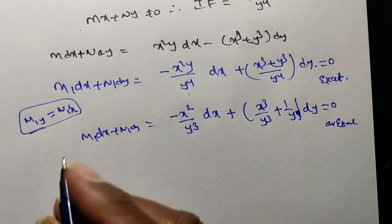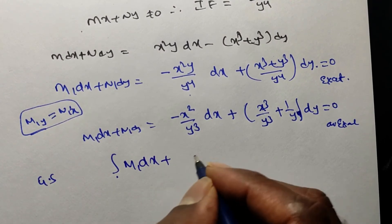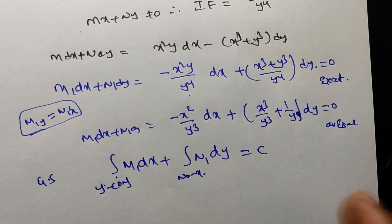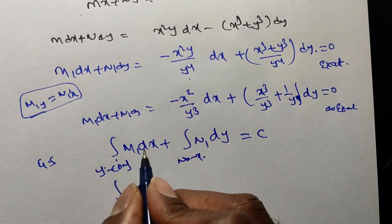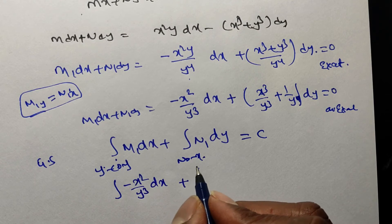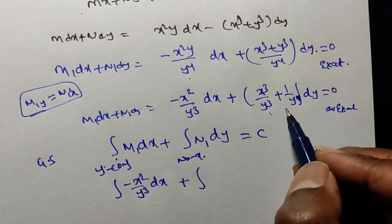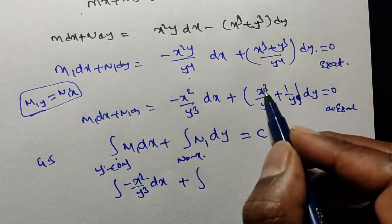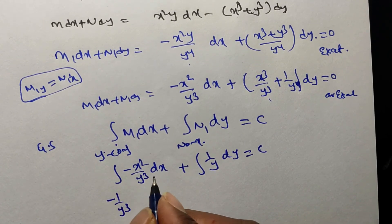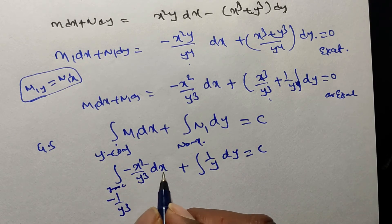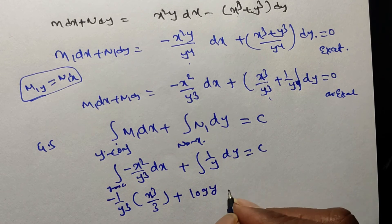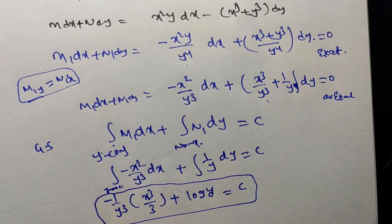For an exact equation, the general solution is: ∫M₁ dx + ∫(terms in N₁ free from x) dy = c. M₁ = x²/y³, where y is constant, so ∫(x²/y³) dx = x³/(3y³). From N₁, the term −x³/y⁴ contains x so we skip it; the term −1/y has no x, so ∫(−1/y) dy... wait, it is +1/y, giving ∫(1/y) dy = log y. Therefore the general solution is x³/(3y³) + log y = c.